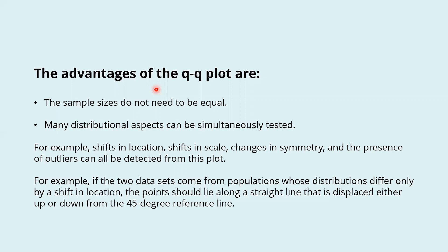For example, if the two data sets come from populations whose distributions differ only by a shift in location, the points should lie along a straight line that is displaced either up or down from the 45-degree reference line.